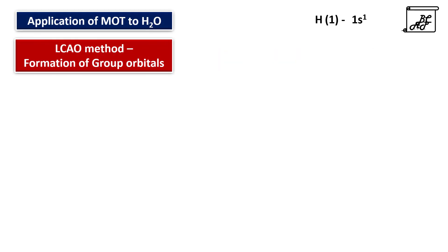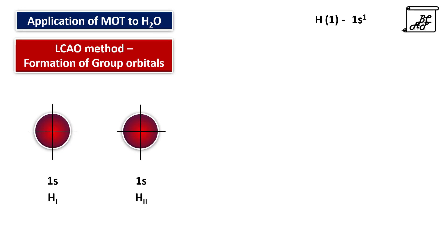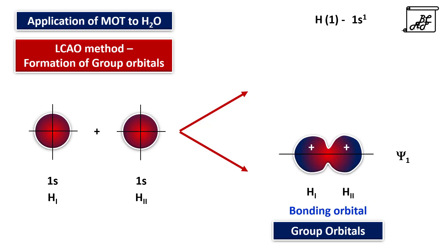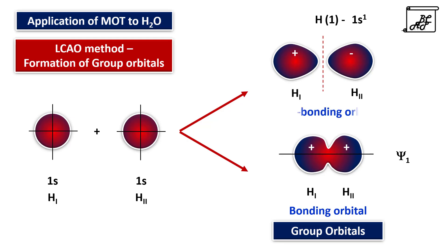The first step is the linear combination of atomic orbitals. Hydrogen has atomic number 1 with electronic configuration 1s¹, so two 1s orbitals of the two hydrogen atoms combine with each other. As two orbitals are combining, two group orbitals will be formed: one bonding molecular orbital ψ₁ and one antibonding molecular orbital ψ₂.